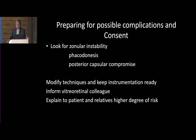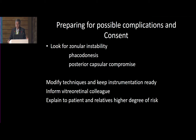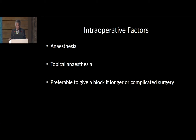When preparing for possible complications and obtaining consent, you have to talk to the patient and explain that there can be zonular instability and phacodonesis, and there can be posterior capsular compromise. You have to modify techniques and keep the instrumentation ready. Inform your vitreoretinal colleague — be sure to do this surgery when your vitreoretinal colleague is in town and not when they are away at a conference. Explain to the patient and relatives the higher degree of risk involved.